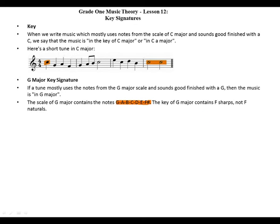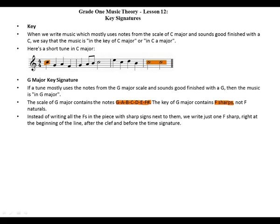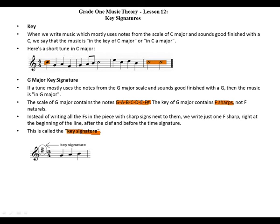The key of G major contains F sharp, not F natural. Instead of writing a sharp sign next to every F in the piece, we write just one F sharp right at the beginning of the line, after the clef and before the time signature. This is called the key signature.